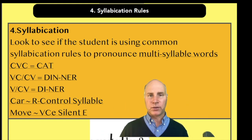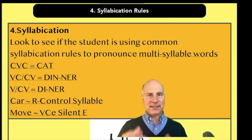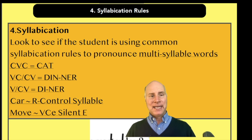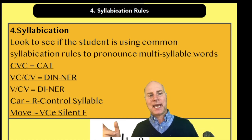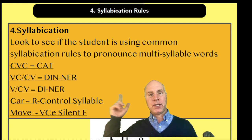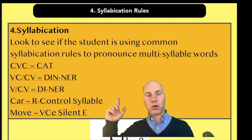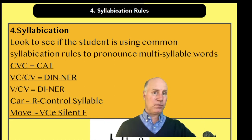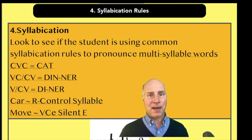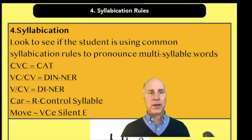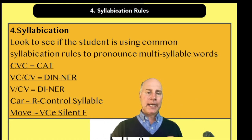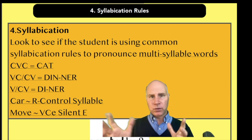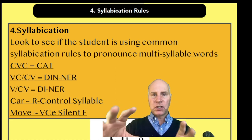We spent time on open and closed syllables and those types of syllabication rules. That's the stuff you should be able to spot on the day of the test — for example, if a student wasn't able to correctly pronounce 'dinner' or 'diner' because they didn't have the specific syllabication rule down. When studying syllabication, there are a lot of rules, so focus on the key ones.